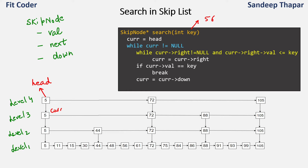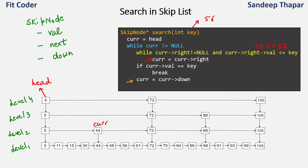We check current right which is 72. Since 72 is not less than or equal to 56, we exit the inner loop and set current equal to current down, coming down another level. Now current right is 44, which is less than or equal to 56, so we set current equal to current right — current comes to 44. In the inner loop again, current right is 72, which is not less than or equal to 56, so we exit and set current equal to current down, arriving at level 1 at node 44.